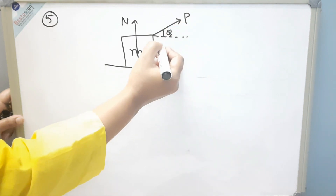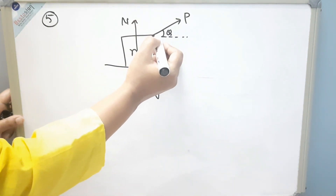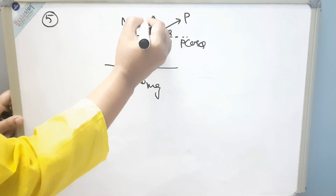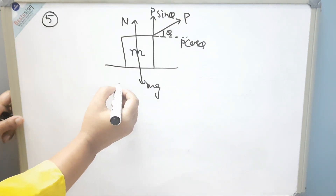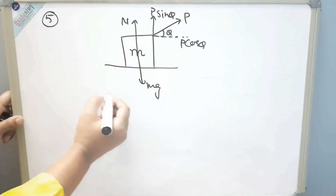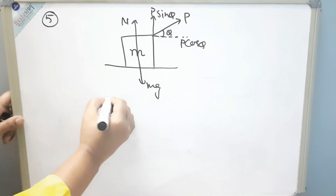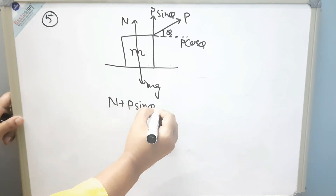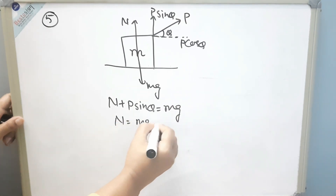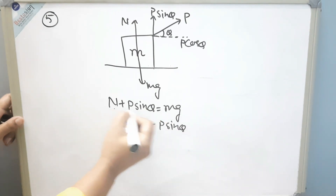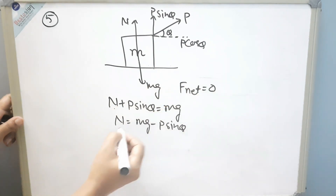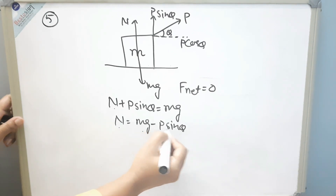In the fifth situation, there is an object of mass m on the surface and a force P is applied at an angle theta. We resolve P into components: P cos theta in the horizontal direction and P sin theta in the vertical direction. Since P sin theta and N act upward and mg acts downward, adding forces: N plus P sin theta equals mg. So N equals mg minus P sin theta.